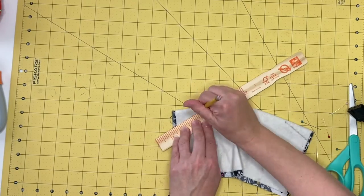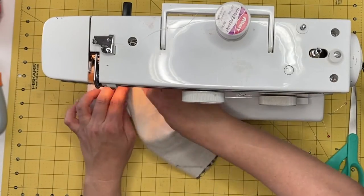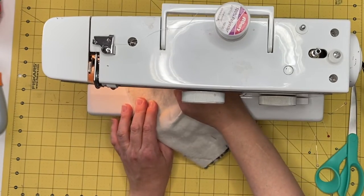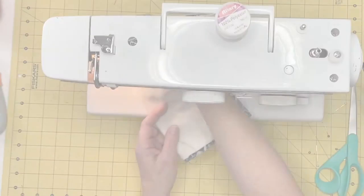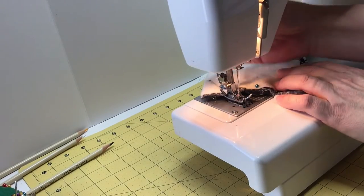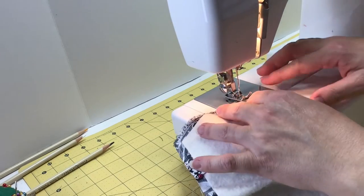At this point, you will need to check to see if your bowl cozy will fit your bowl. If it is too loose, feel free to adjust your darts to make the bowl cozy tighter on the top or bottom of the bowl shape. Then, sew the darts you just drew.